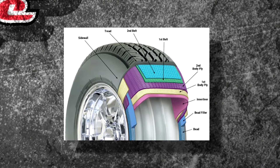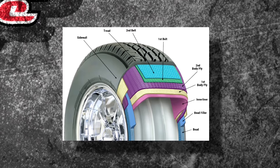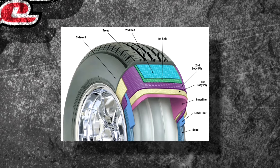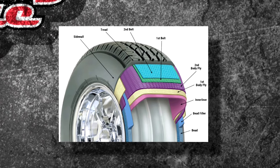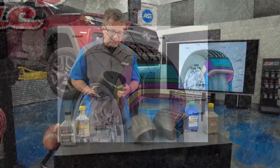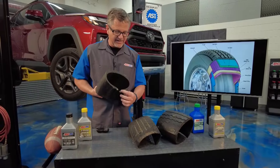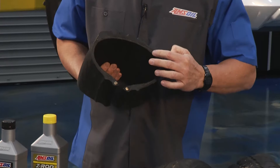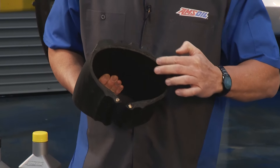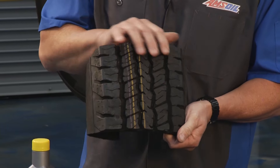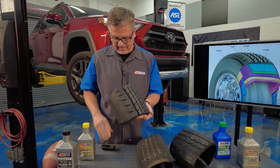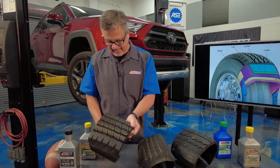Let's look at a tire and what's going on inside. You can see the bead, the tread, the sidewalls — there's a lot happening. I actually have one right here; you can see the bead, the actual plies, and the tread section.